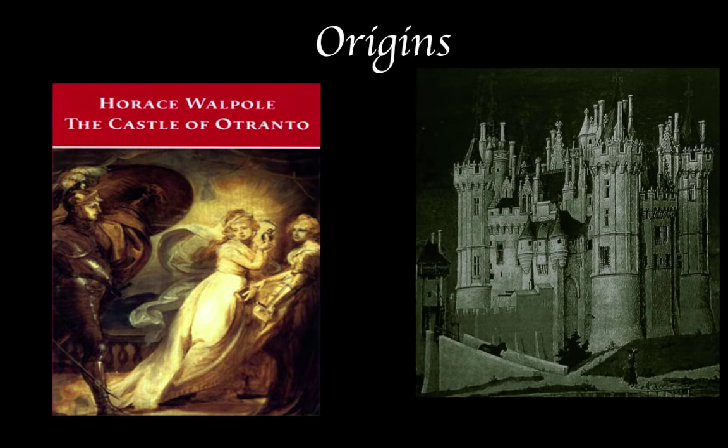Horace Walpole's The Castle of Otranto, published in 1764, is largely credited with kick-starting the English gothic phenomenon. Full of lengthy, adjective-ridden descriptions that arguably diffuse rather than develop a feeling of horror, nevertheless the novel had an electrifying effect on its audience.